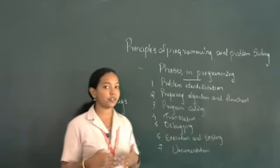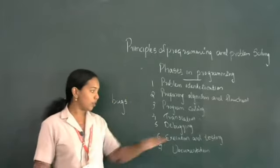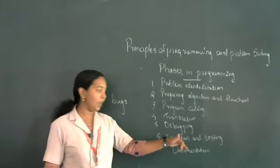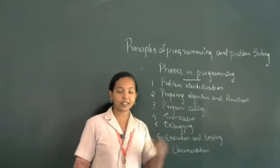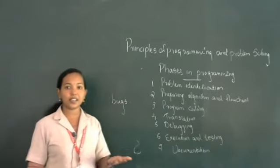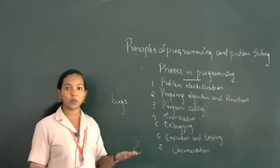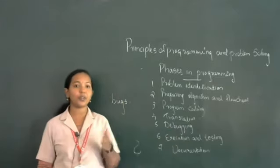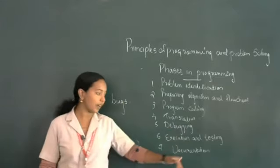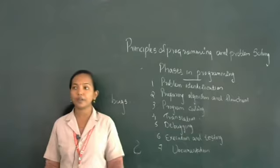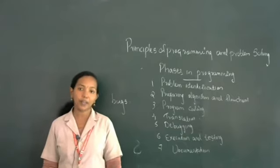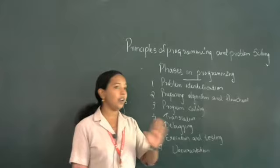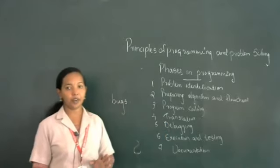After removing all the bugs, the next step is execution and testing. We can execute the program and test whether it is working or not. After testing and execution, if the program is correct, we can take a printout or soft copy of our program. Then comes documentation. These are the different phases of programming.